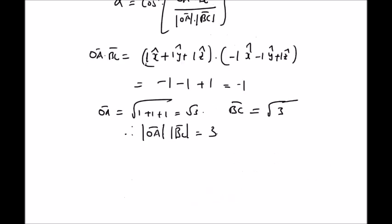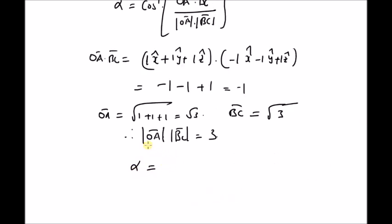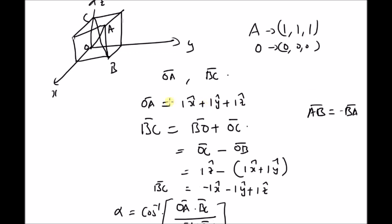Hence, the angle between the two body diagonals OA and BC is cos⁻¹(−1/3), which equals 109.47°. This angle α = 109.47° is the angle between OA and BC on one side. On the other side, the supplementary angle β = 180° − α.